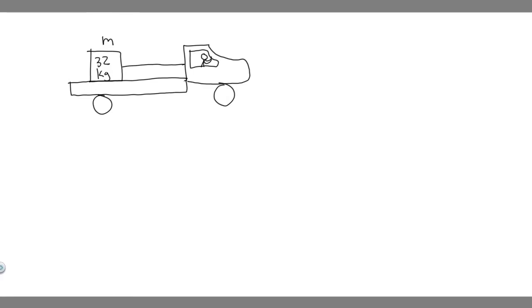In this problem, a crate of mass m equals 32 kilograms rides on the bed of a truck, attached by a cord to the back of the cab as shown in the figure. The cord can withstand a maximum tension of 68 newtons before breaking. Neglecting friction between the crate and the truck bed, find the maximum acceleration the truck can have before the cord breaks.